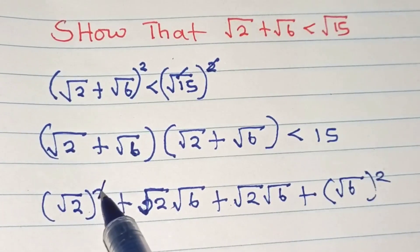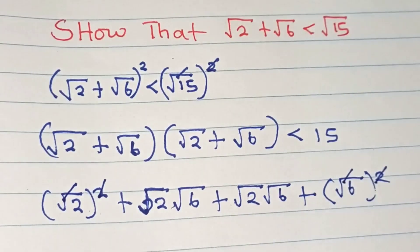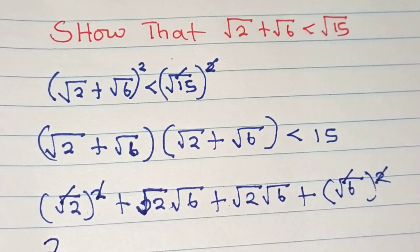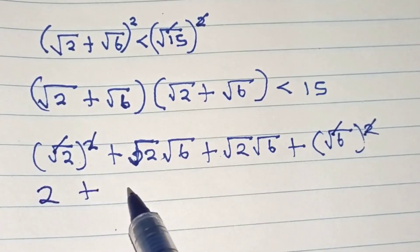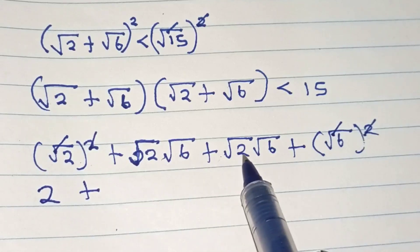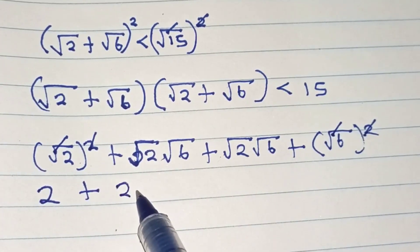The square cancels the square root. We have 2 plus 2 times root 2 times root 6, plus root 2 times root 6, which is the same thing as 2 root 12.